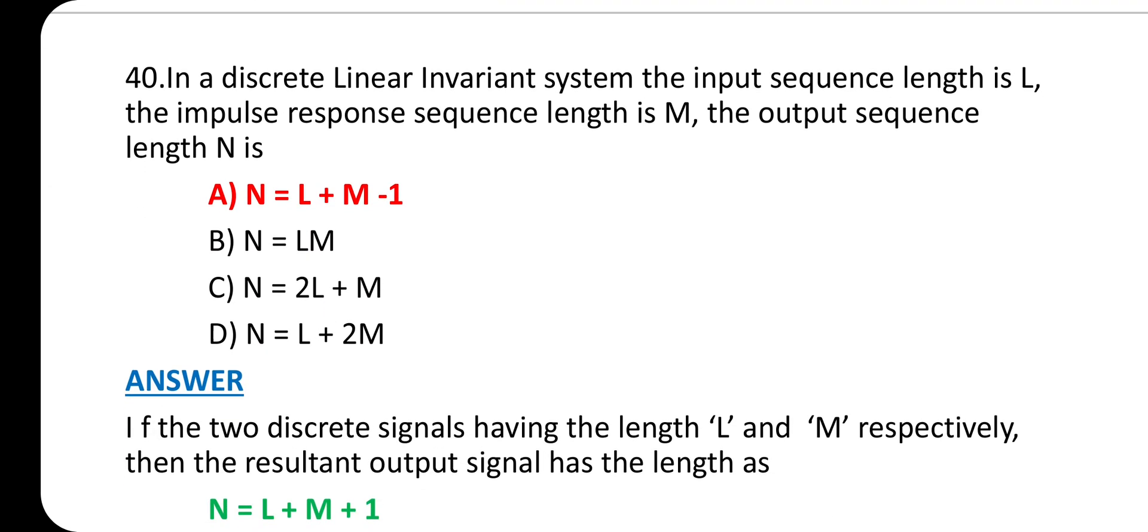The last question of this video is 40. In a discrete linear invariant system, the input sequence length is L, the impulse response sequence length is M, the output sequence length is N. Answer is option A: N = L + M - 1.